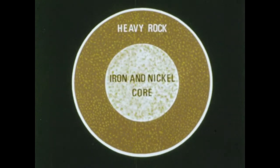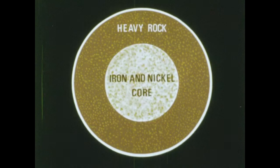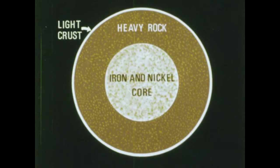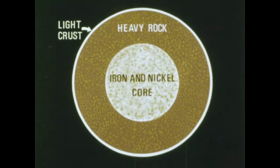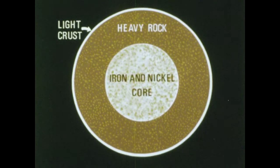Around this core, there is a thick layer of heavy rock, the mantle, about 3,200 kilometers thick. On top of this heavy rock is the very thin and very light crust upon which we live. This crust varies in thickness from 11 to 50 kilometers.